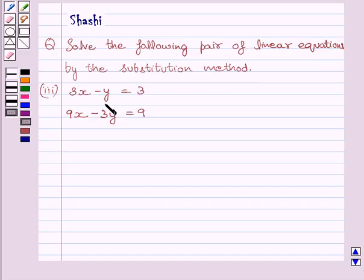The first equation is 3x minus y is equal to 3, and the second equation is 9x minus 3y is equal to 9.